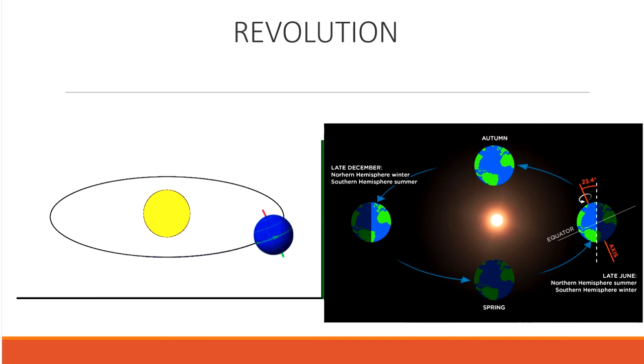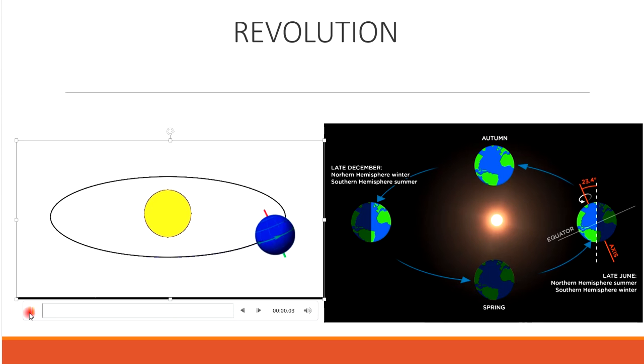Now see what is revolution. You can see here this is the sun and this is the Earth, how it is moving around the sun. This is called revolution.